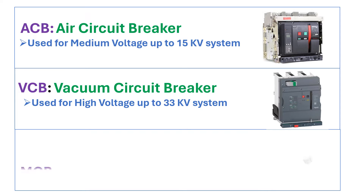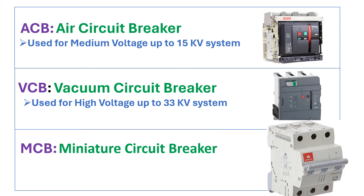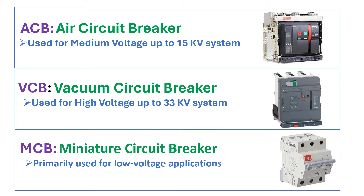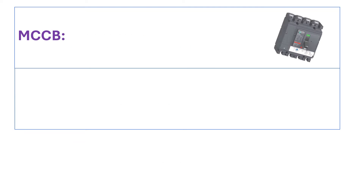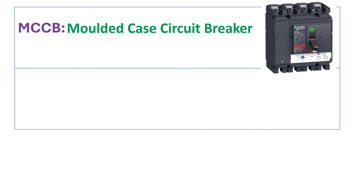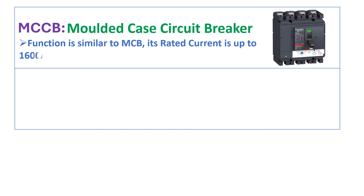Next is MCB. MCB stands for miniature circuit breaker and it is used for low voltage applications. MCCB stands for molded case circuit breaker. Its function is similar to MCB and its rated current is up to 1600 amperes.